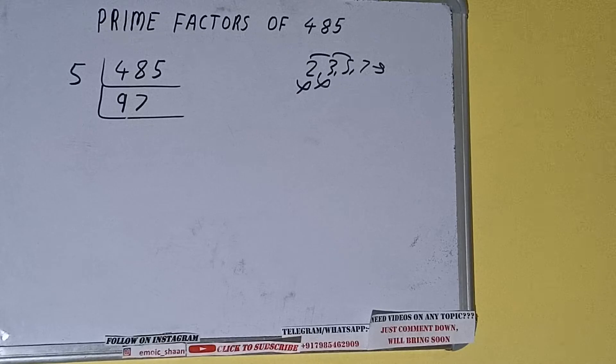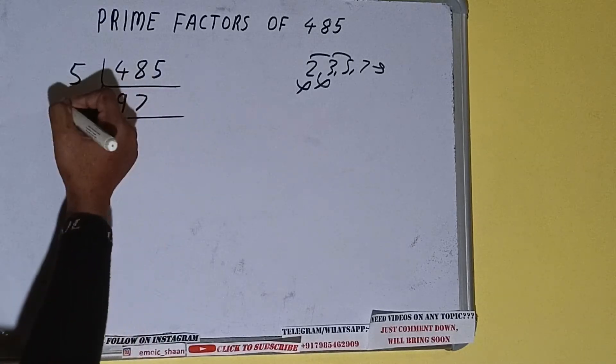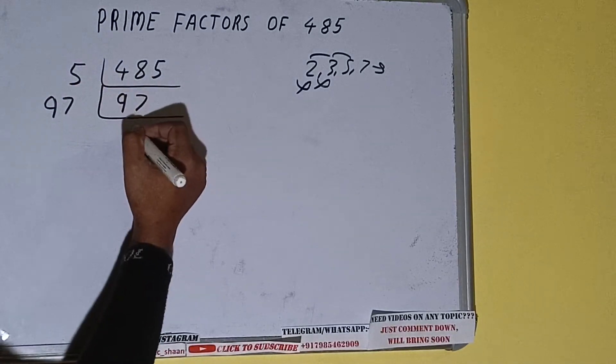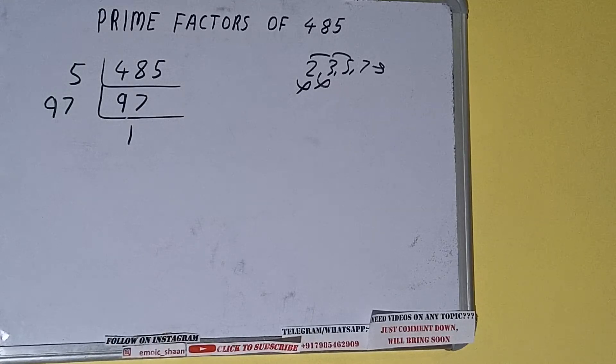on that, 97 is also a prime number, so it is only divisible by itself, that is 97. And once we do so, we'll be getting one. Once we get one, we need to stop and do one last thing,